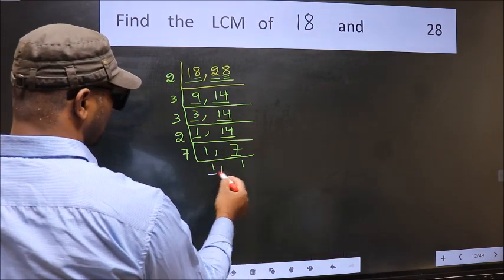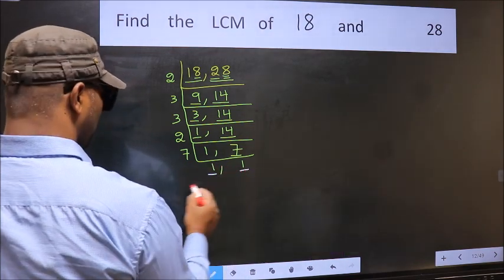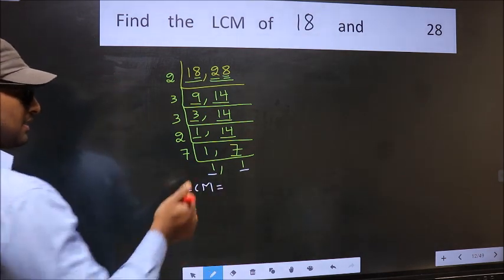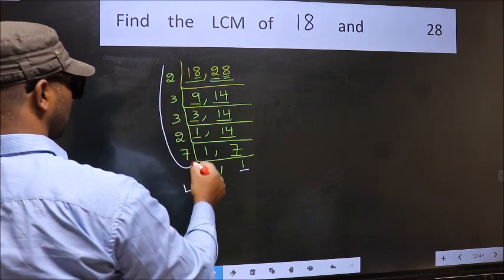So we got 1 in both the places. So our LCM is the product of these numbers.